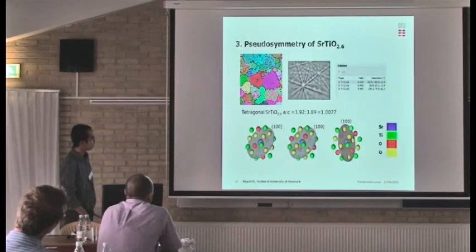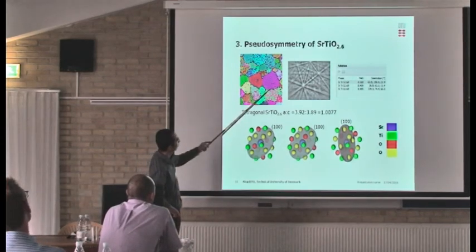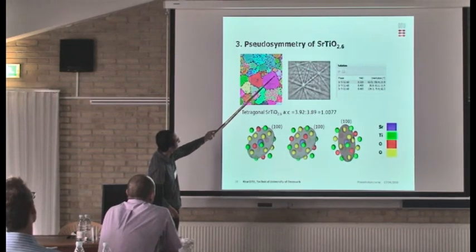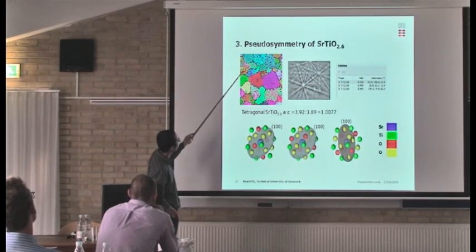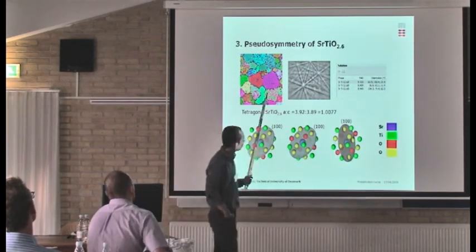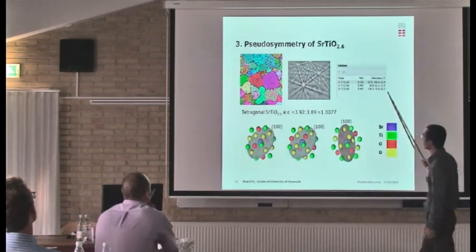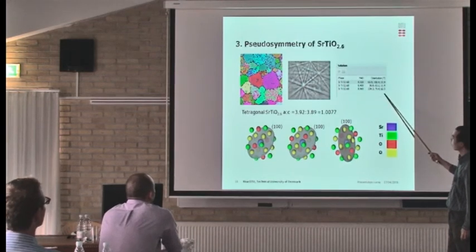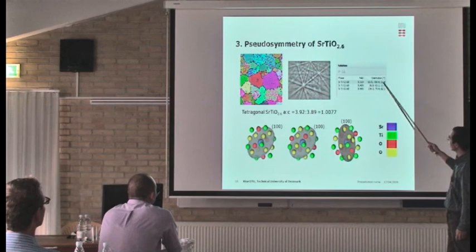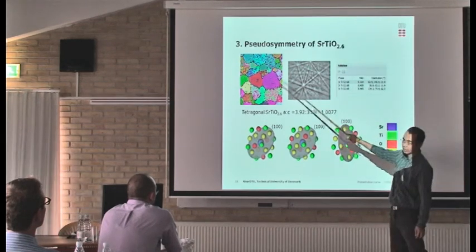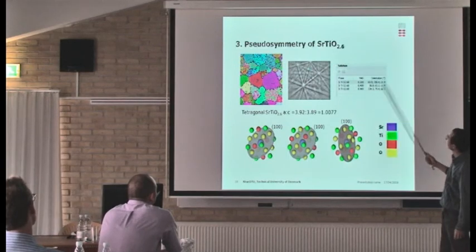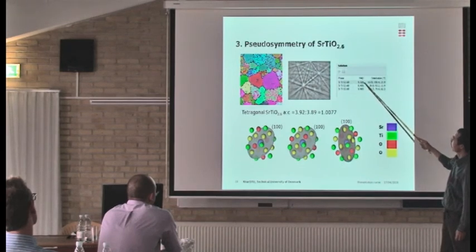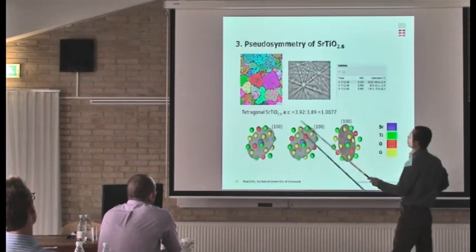Here is a small pseudo-symmetry example. If we look at a grain, you can see that some grains have only one color, while some grains have two colors. Here is the indexing solution — the software always finds three solutions at each point, and of course the software chooses the best one, but the rule still has the answer.